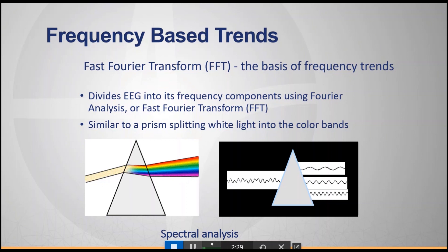If you look at the raw EEG, it's pretty polymorphic — it contains lots of different frequencies and lots of mixed frequencies. Just like white light contains light of all different wavelengths combined together, we use a prism to separate white light into its component wavelengths. We use the Fourier transform the same way to convert the EEG into its component frequencies.